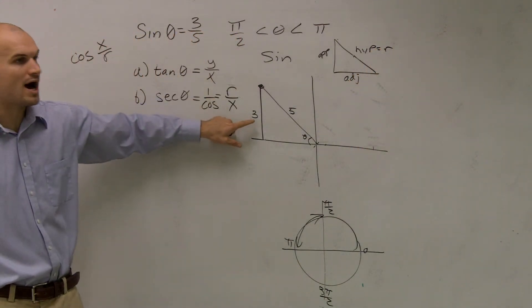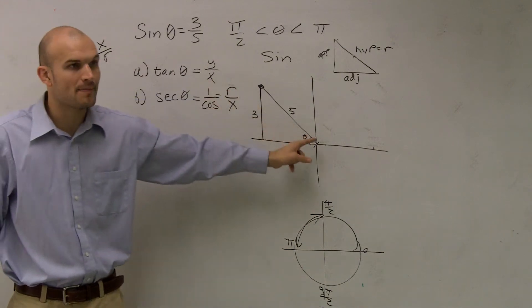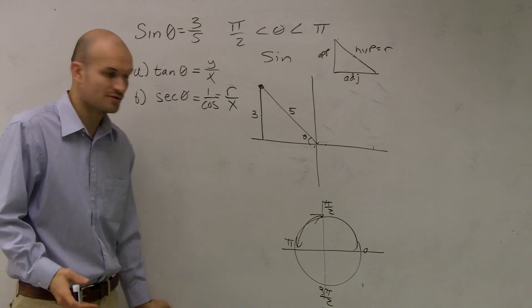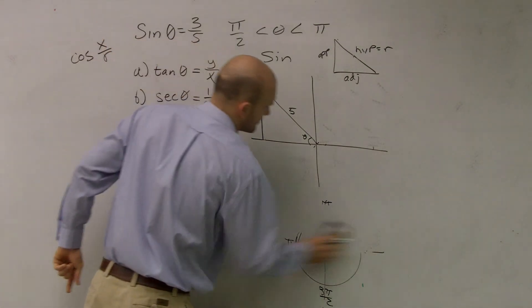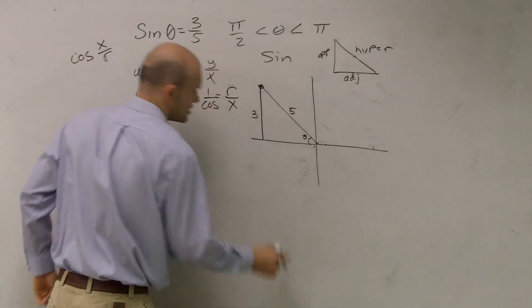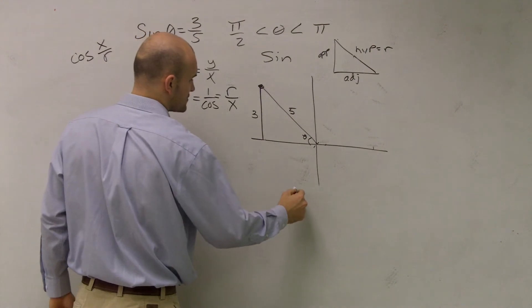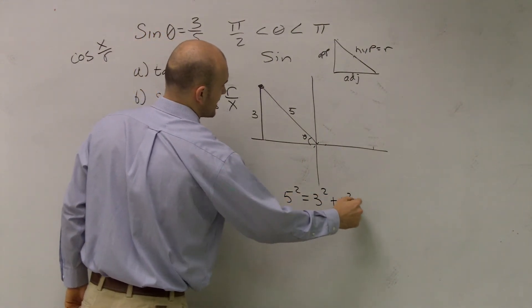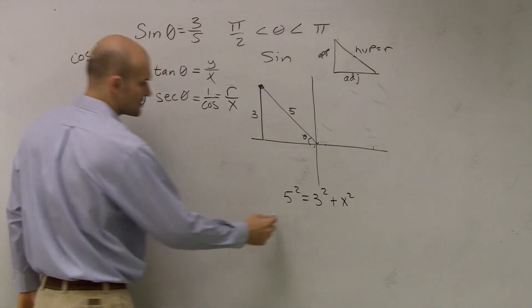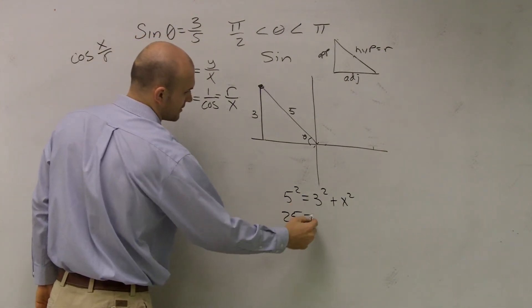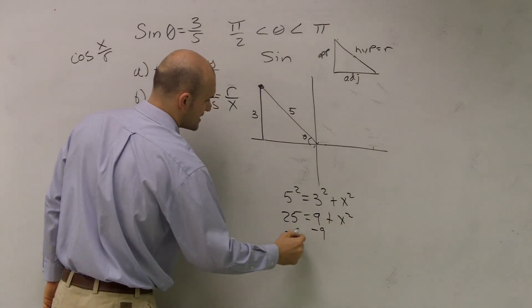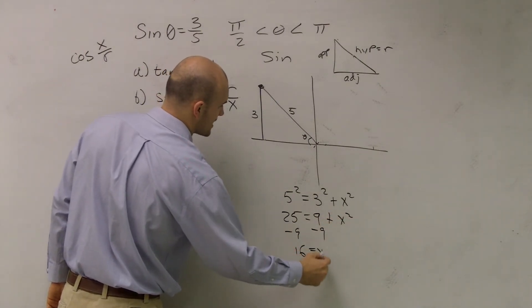So now if you guys notice, we know what our y value is and we know what our hypotenuse is, but we don't know what the x value is. So to find the x value, we have to do the lovely Pythagoras. Cool, I love it. So we have 5² = 3² + x², so we have 25 = 9 + x² minus 9. You get 16 = x².